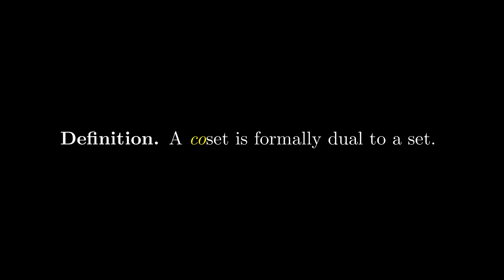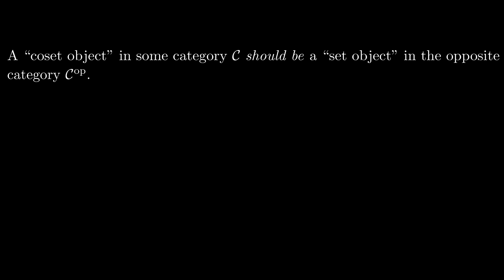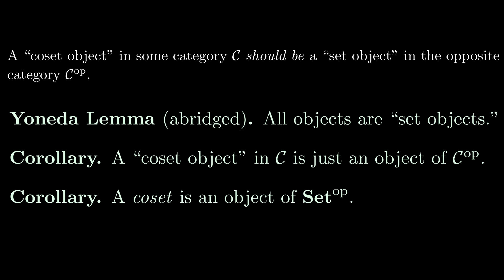Well, okay. What is the opposite of a set? Taking after algebras, a co-set object in some category should be a set object in the opposite category. However, all objects of a category are set objects in a sense. This leads us to the conclusion that a co-set object should just be an object of any opposite category.